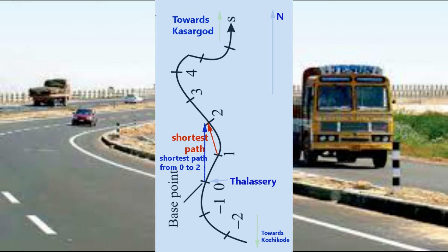Moving along the national highway does not mean we are taking the shortest path from zero to two. There may be shorter paths, but the national highway is constructed considering many factors, not just the shortest distance. So we cannot always expect that while moving along the national highway we are moving along the shortest path. Therefore, the length of the arc through which we are moving is very important in our discussions, especially when discussing the unit tangent vector and so on.